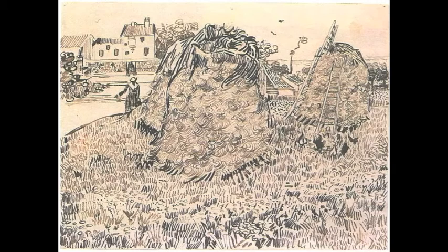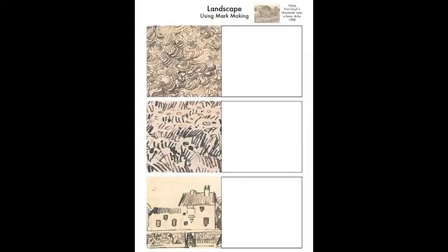Now we're going to look at Van Gogh's mark making — looking at just one of his drawings and some of the marks he made. Here's one which is Haystacks, I think it's a farm near Arles. It's just to look at different ways he showed different parts of this picture. You can see he used one mark for the haystacks, a couple of different marks for the grass on the ground with stones. In the handout attached here, I've isolated out three of those parts: the haystack texture, the one for the grass, and how he drew the houses at the back.